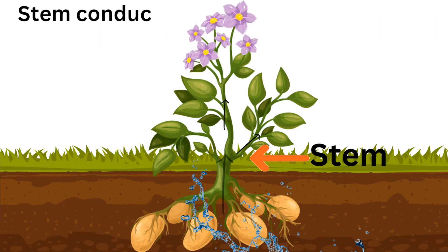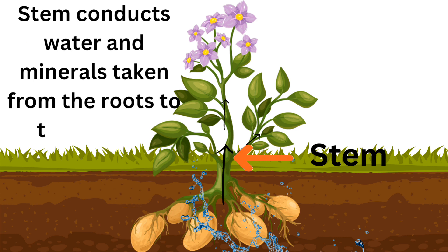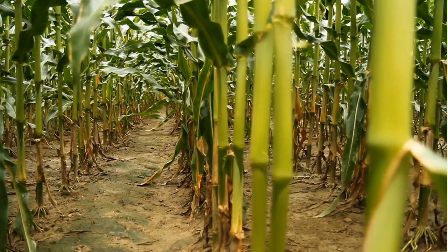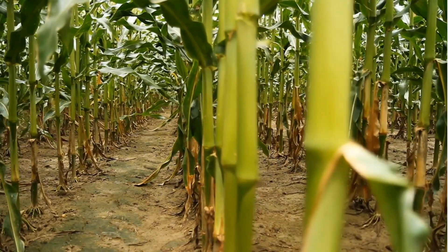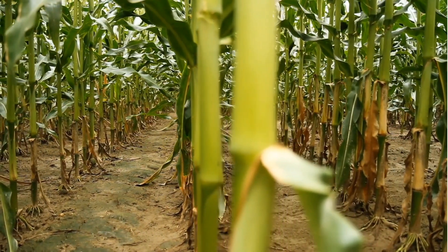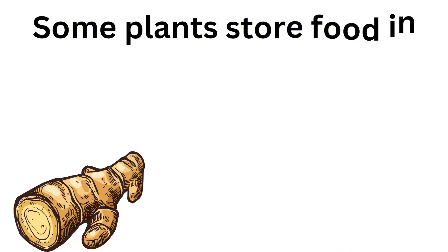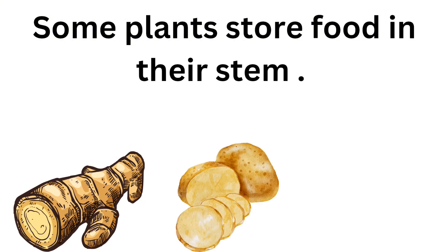Stem is the aerial part of the plant body. The stem conducts water and minerals taken from the roots to the leaves. It gives support to leaves, flowers, and fruits. Some plants also store food in their stem.